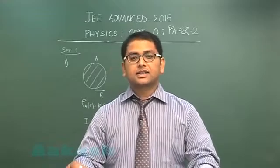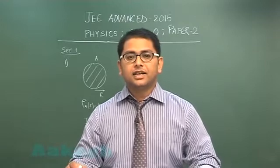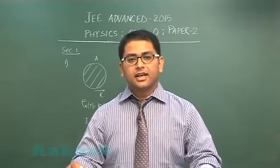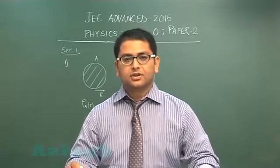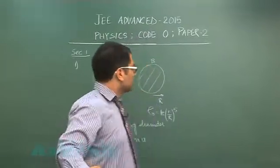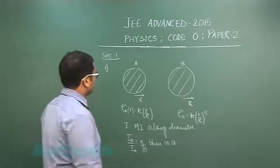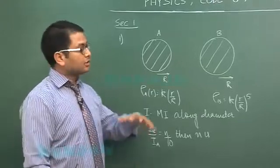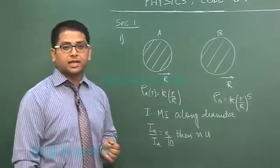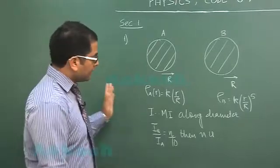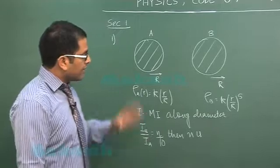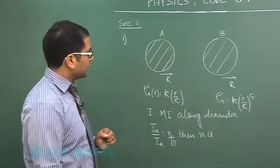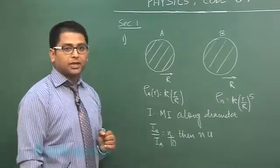Hello and welcome to the discussion and solution session of JEE Advanced 2015 Paper 2 Physics. I will discuss code 0. Section 1 of this question paper begins with integer type questions, as did code 0 Paper 1, and answers lie between 0 to 9, both inclusive. The first question is from rotational motion, specifically from the topic of moment of inertia.